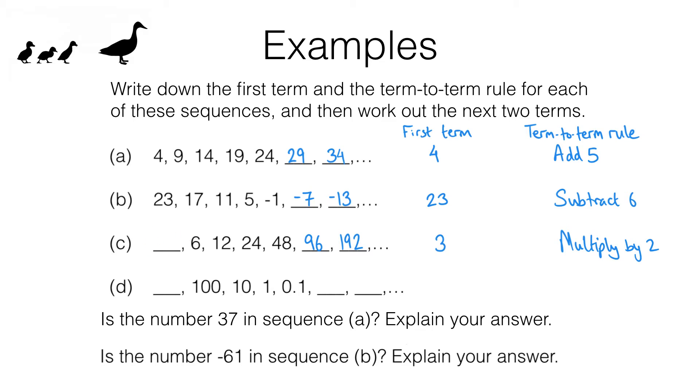Another way to find this first term by the way would be to work backwards. If you know that going forwards along this sequence involves multiplying by 2 then going the other way would mean dividing by 2. For example 48 divided by 2 is 24, 24 divided by 2 is 12, 12 divided by 2 is 6 and 6 divided by 2 gives us 3 which is the first term we're looking for.